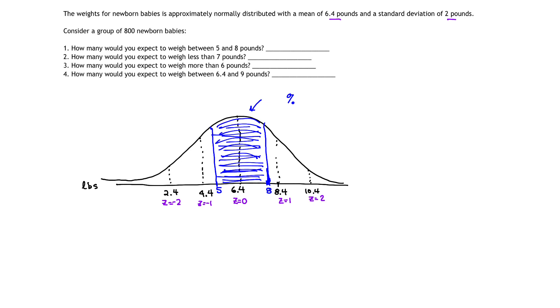And how do we do that? Well, we have a formula. Our formula for calculating z-scores is that the z-score is equal to your given data number, X, minus the mean, divided by the standard deviation.